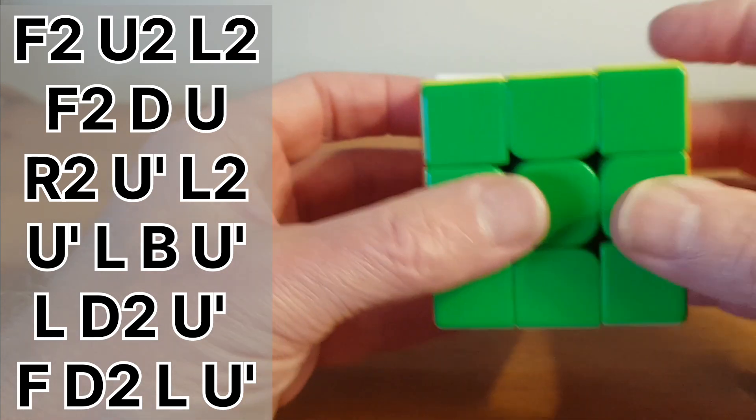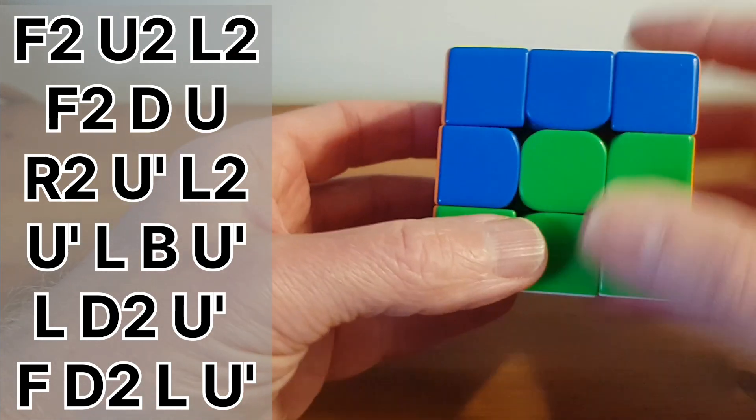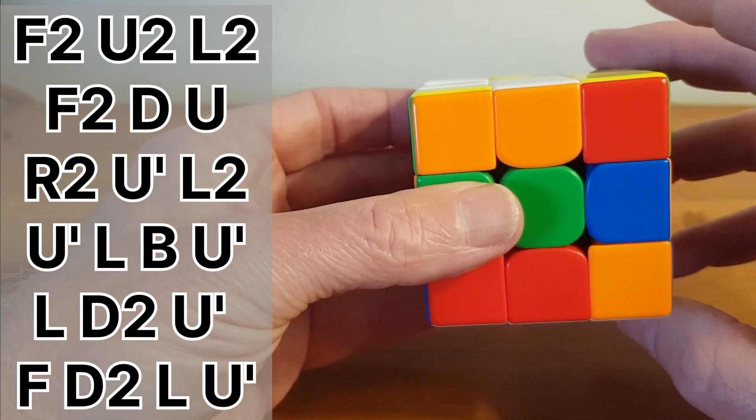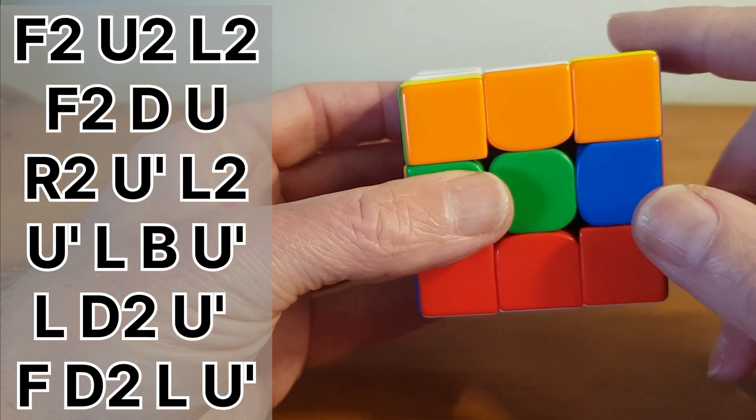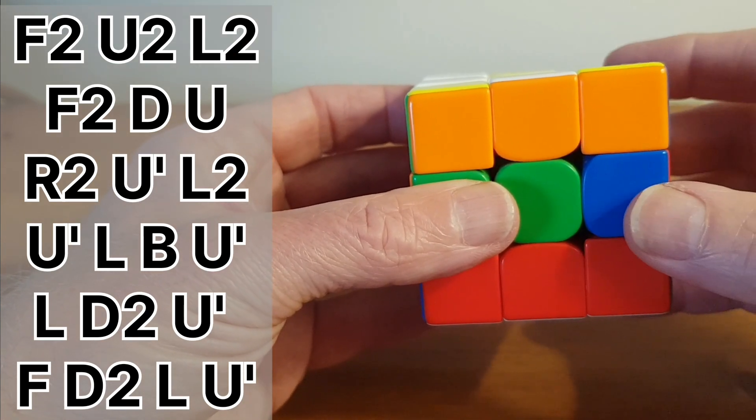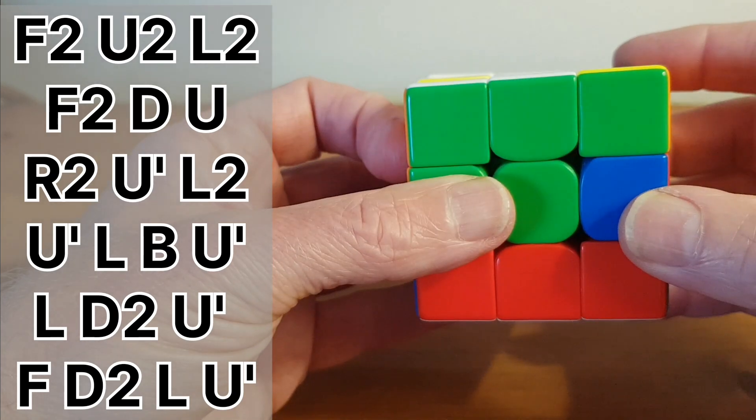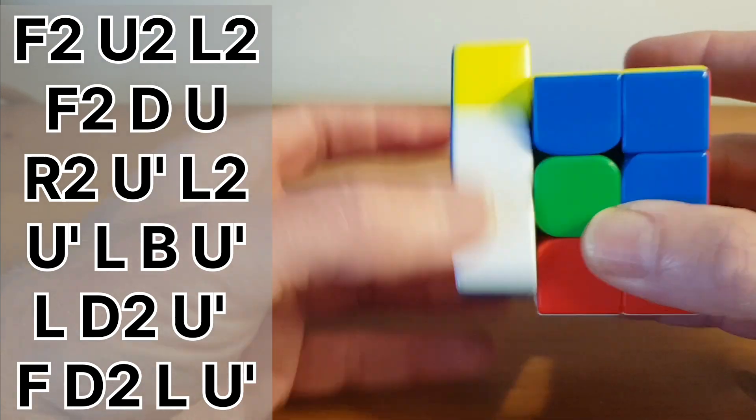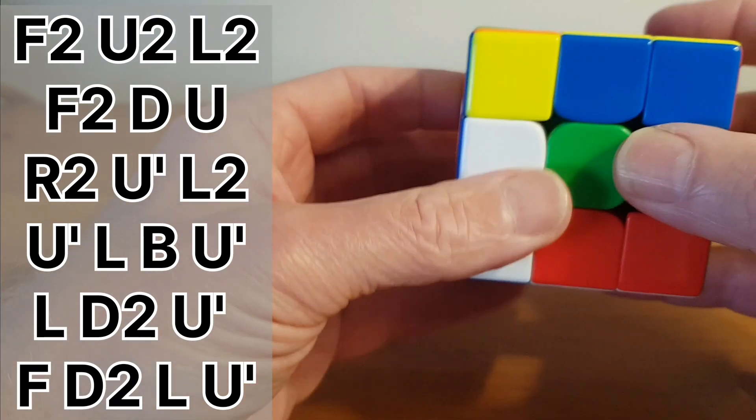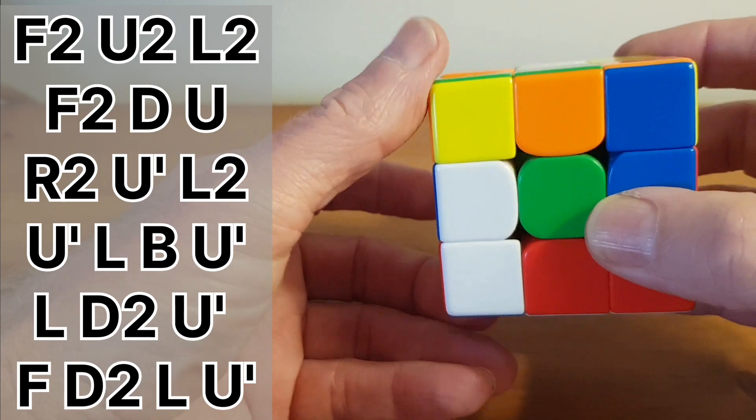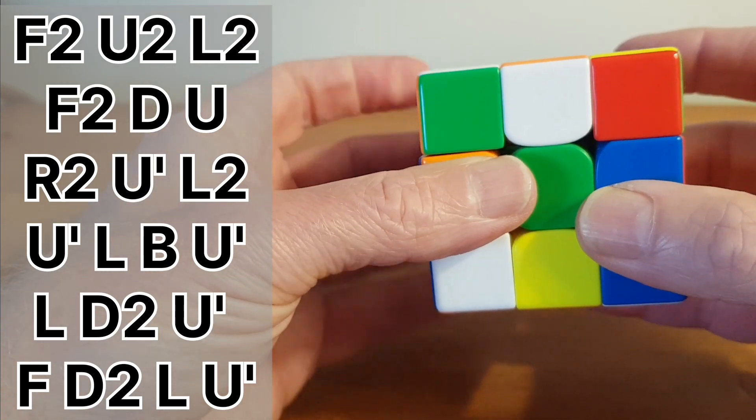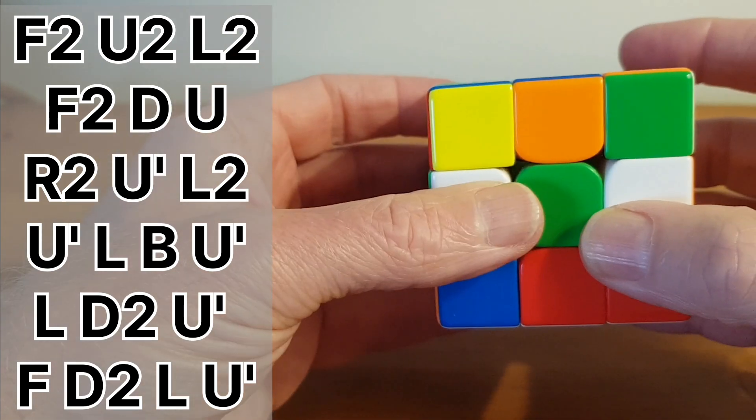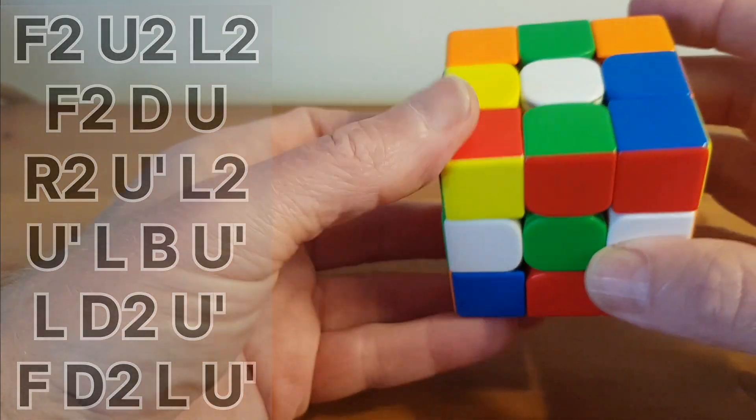This solve would be F2, U2, L2, F2, D, U, R2. Now we have our first inverse, you see it's got that little apostrophe, so that's inverse. That's U inverse, we've got L2, U inverse again, L, B, U inverse, L, D2, U inverse, F, D2, L, U inverse.